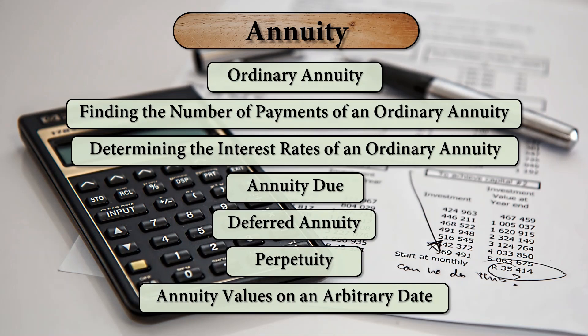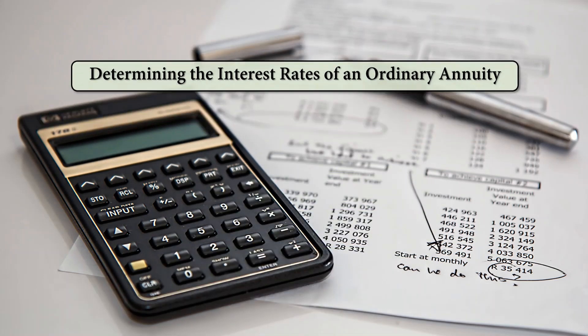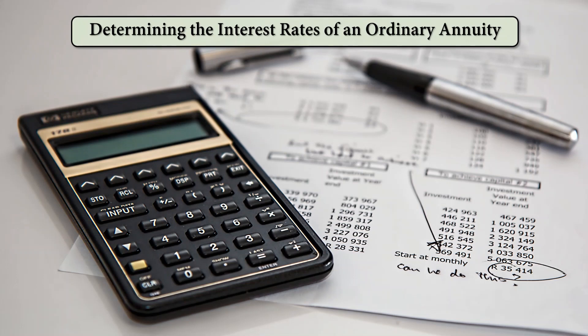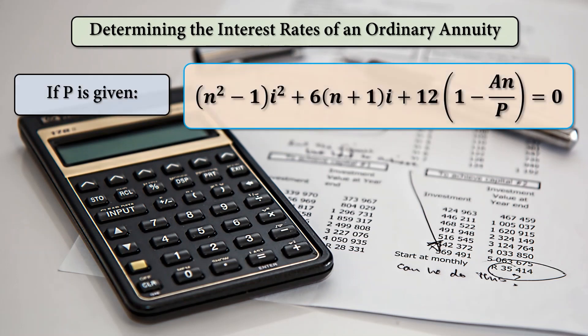Our third topic under annuity is all about determining the interest rates of an ordinary annuity. The formula, if P is given, we are going to use this formula or this equation, the quantity of n squared minus 1 times i squared.